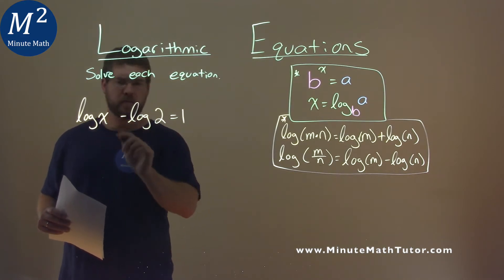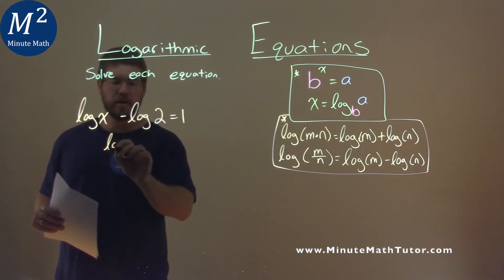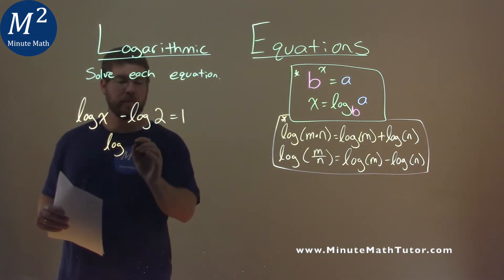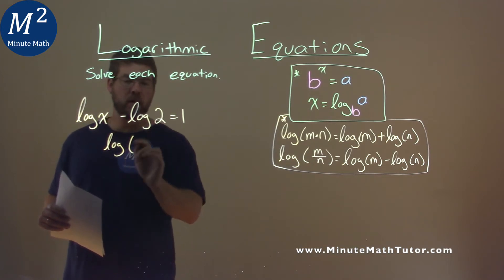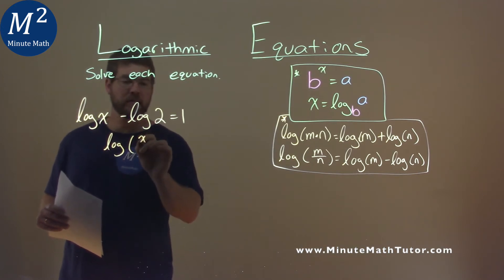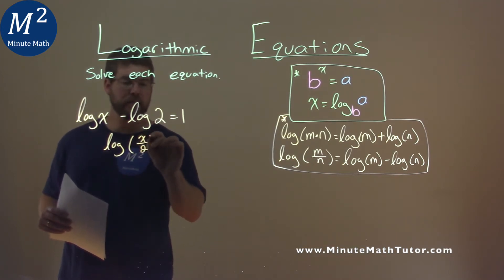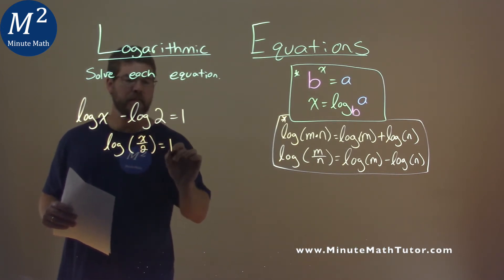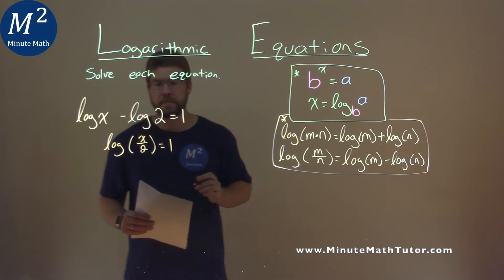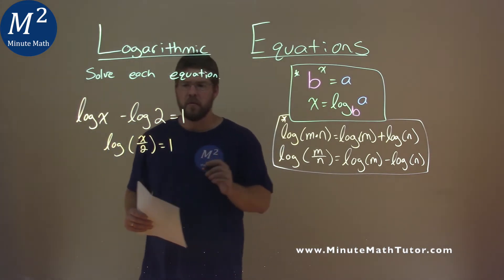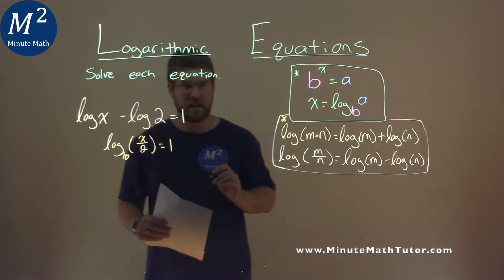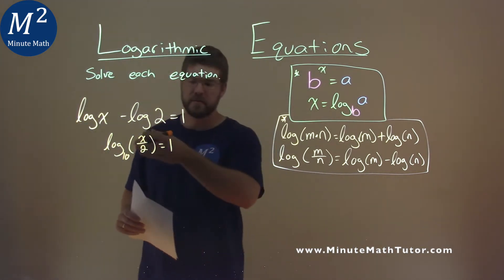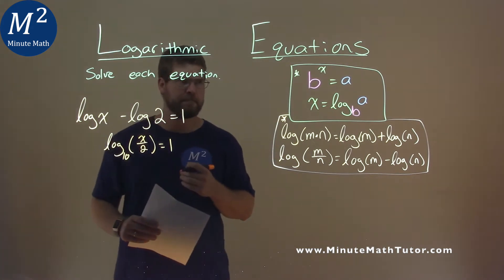So it's subtracting, so we can combine log of x minus log of 2 as log of x divided by 2, and that's equal to 1. This is a log base 10 — when it's not written, it's going to be a 10.